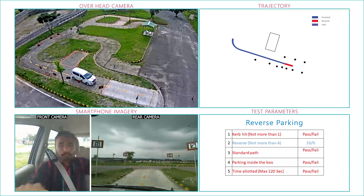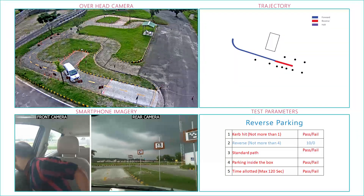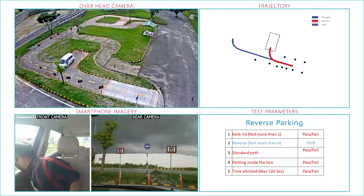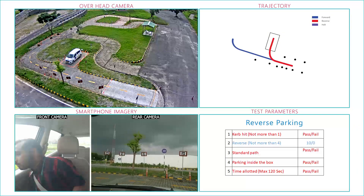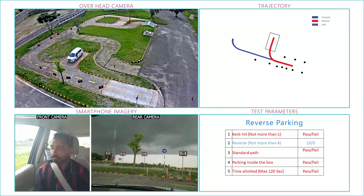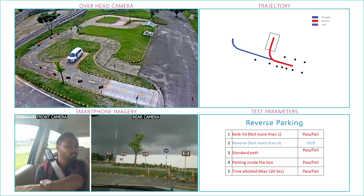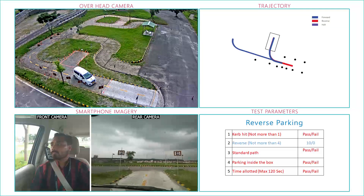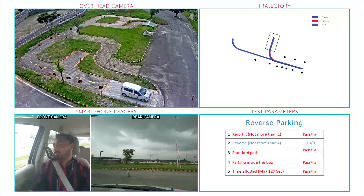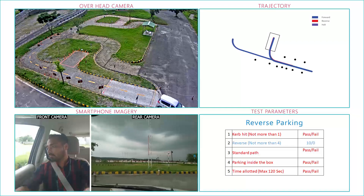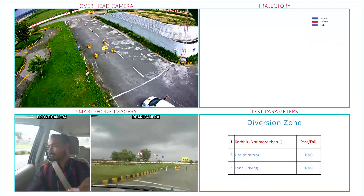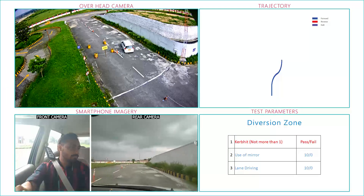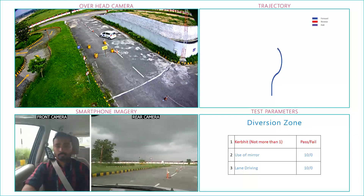Here, we see the trajectory generated for the reverse parking maneuver along with the parameters that are evaluated. The last maneuver is a diversion zone where HAMS evaluates if the driver switches lanes smoothly and also scans the mirror accordingly.